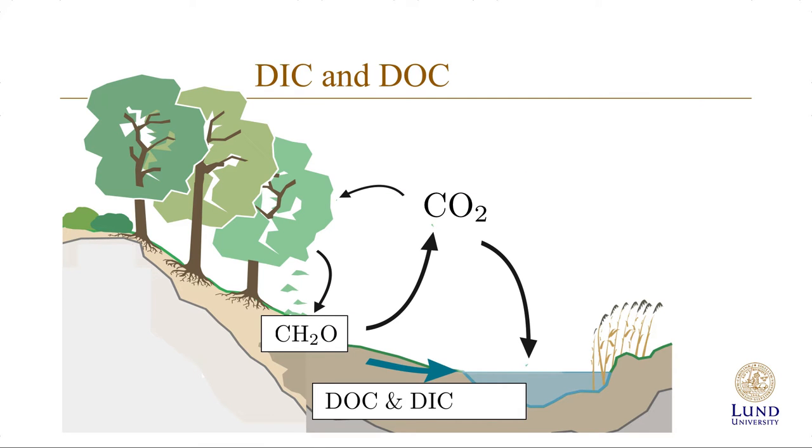So let's start with the carbon species. The DOC and the DIC are formed during the cycling of carbon in the ecosystem. So CO2 is sequestered by plants and trees, it's degraded and between being biomass and being CO2 again, DOC and DIC are formed.